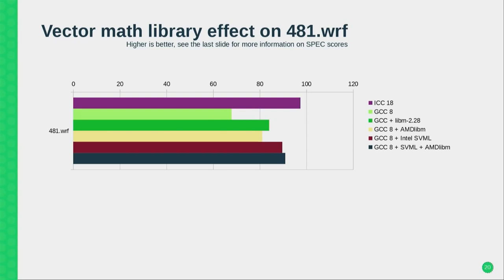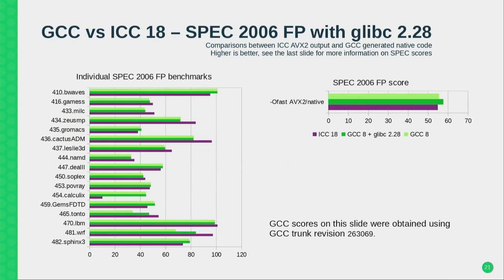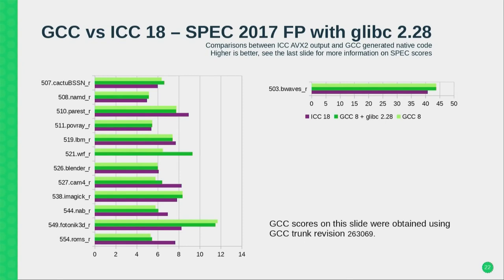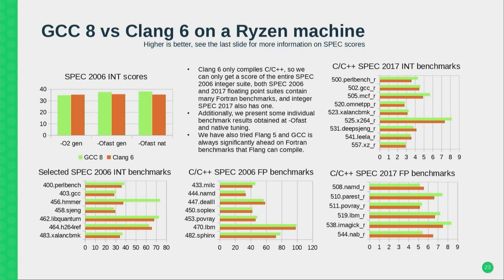These are newer numbers with a newer GCC, newer AMD libm, and newer glibc on otherwise the same system. As you can see, Tonto and WRF — which motivated the work from ARM — improved quite a bit, and the overall score improved quite a bit. As glibc development continues, we may see further improvements in one or more benchmarks.